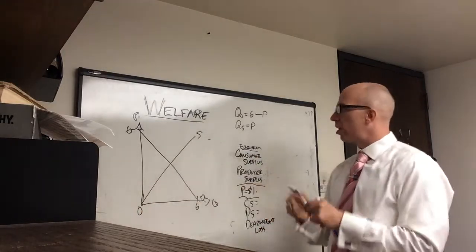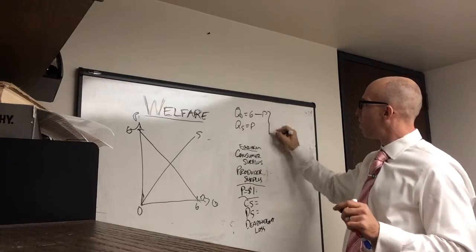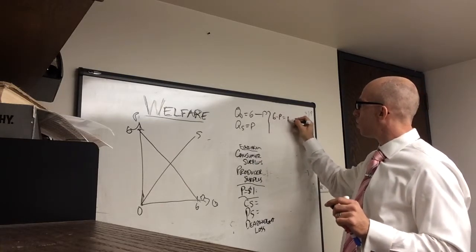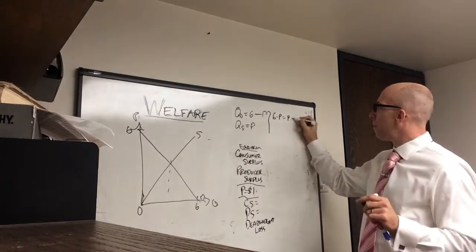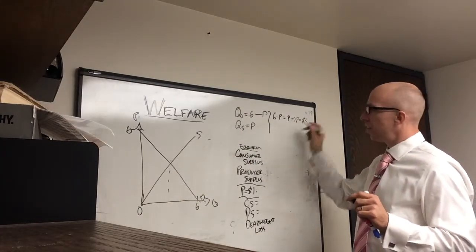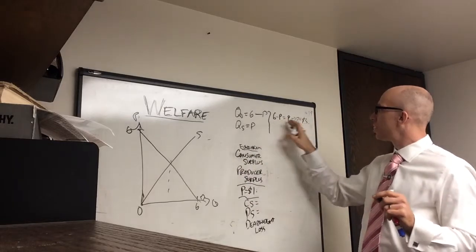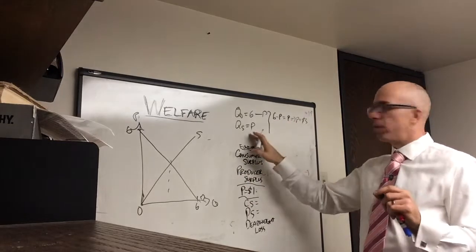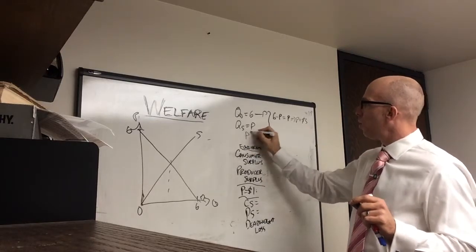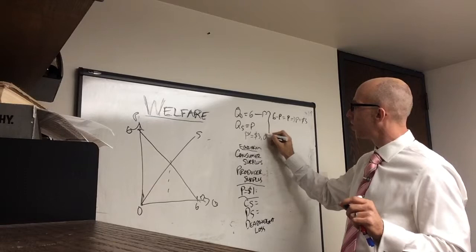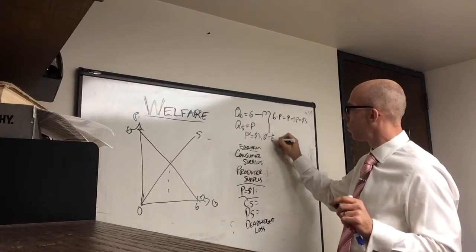Now this point here can be shown algebraically. If you have 6 minus p equals p because Qd equals Qs at this point, you can find out that p equals $3 because 6 equals 2p. And then if you put these equations in here, you can see that quantity is also 3. So p star is $3 and q star is also $3.